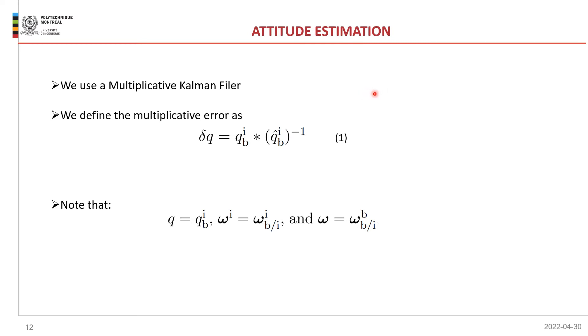which describes the rotation from frame E to frame B. In order to do that, we define a multiplicative error as expressed in equation one. Before starting with the equations of the Kalman filter, we note that we use those notations to simplify our equations.